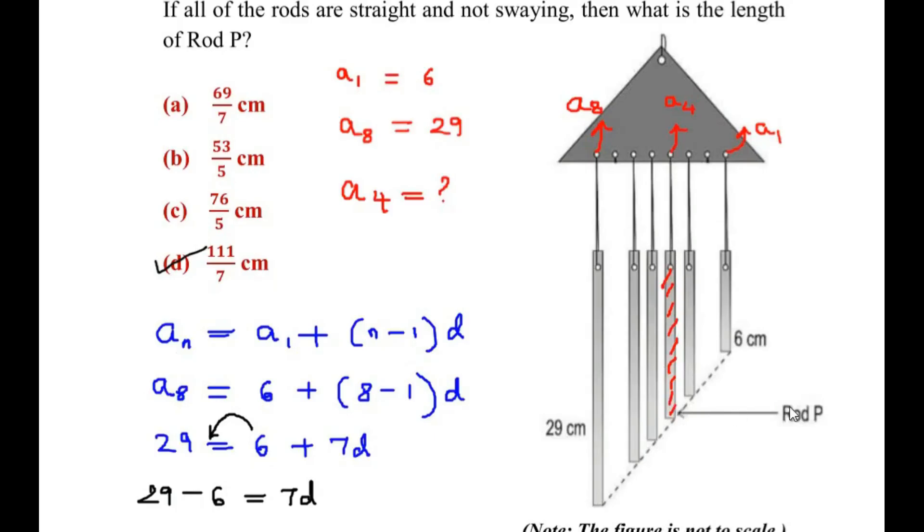Now according to the question, we had to find out the length of rod P, which is in the 4th position, that is A4. And at the 8th position, we have 29 cm.